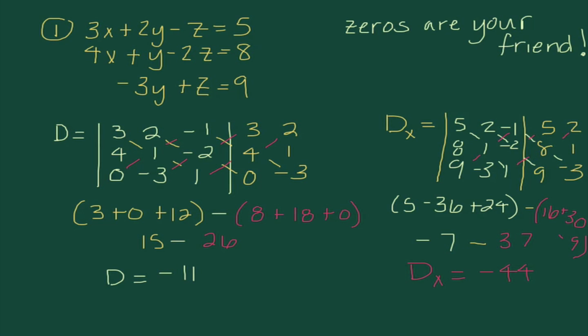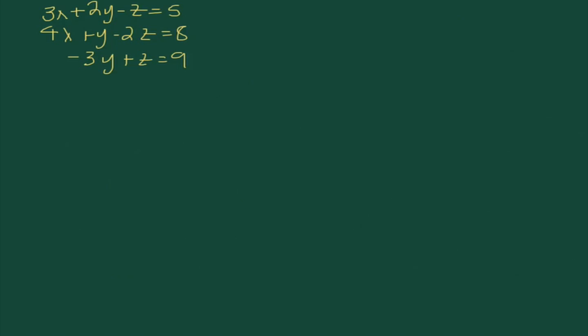So, some things that we can already kind of sense. Our X value is going to be negative 44 divided by negative 11. We know we need to simplify as much as possible. So, we already kind of know our X value is going to be 4. Okay. So, next up, let's go ahead and do D sub Y.